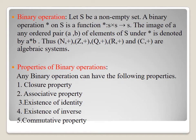First topic: binary operation. Let S be a non-empty set. A binary operation star on S is a function — star is a function from S cross S whose image is in S. The image of any ordered pair (A, B) of elements of S under star is denoted as A star B. Thus, the set of all natural numbers, integers, rational numbers, real numbers, and complex numbers are algebraic systems.